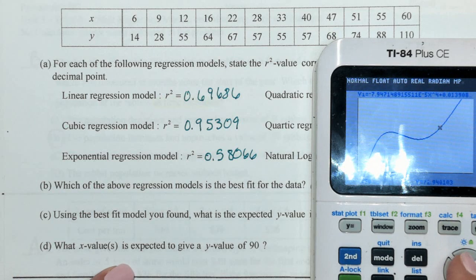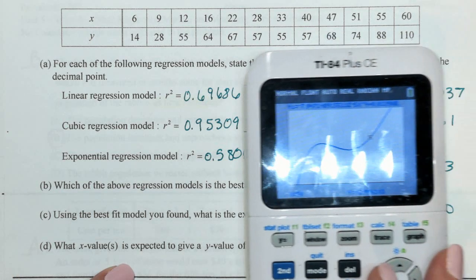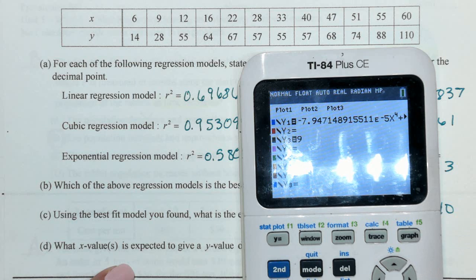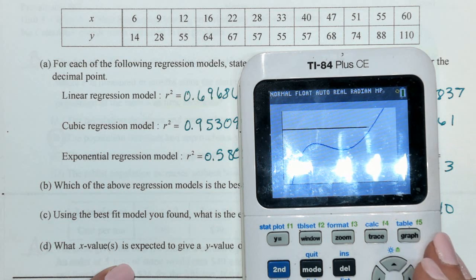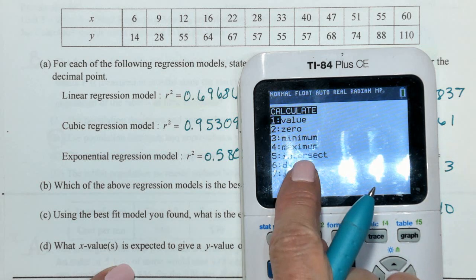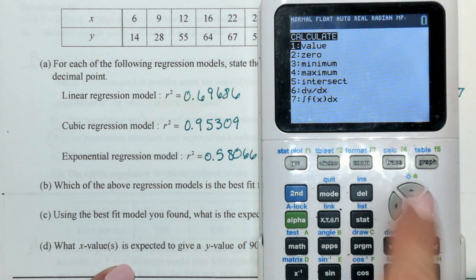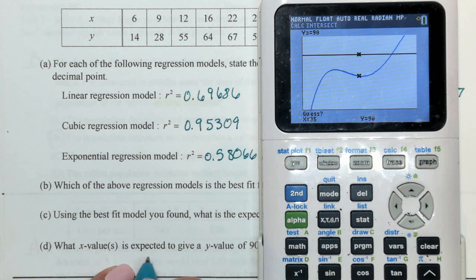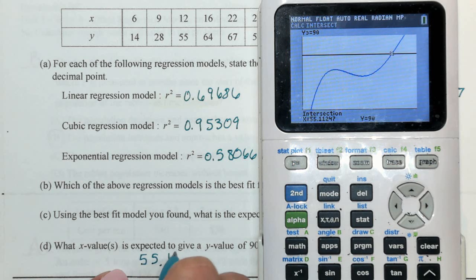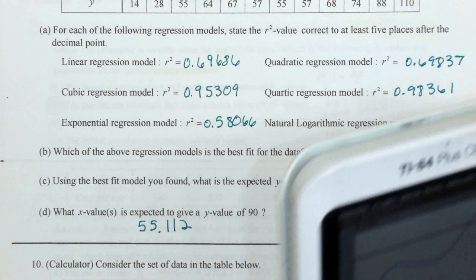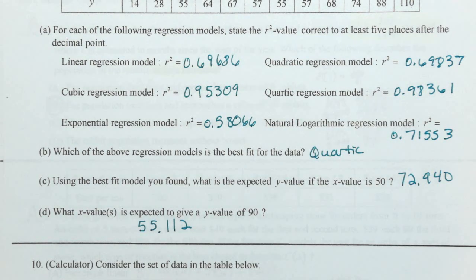What X value is expected to give a Y value of 90? I'm going to go in. Go put 90 in for another Y. Second calc, 5 for intersect. Let me get this where you can see it. 5 for intersect. Enter, enter, enter, enter. And the X coordinate there will be 55.112. So that's all of those problems.